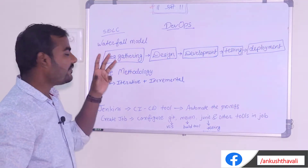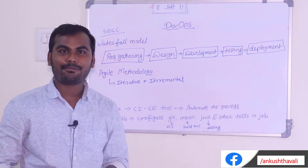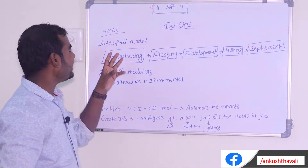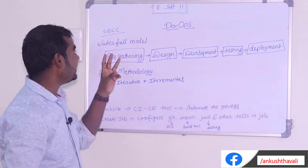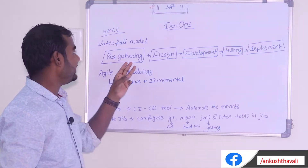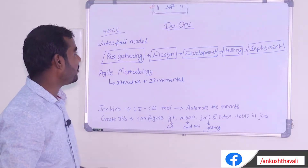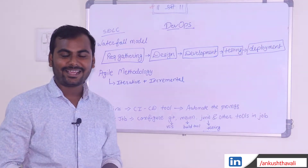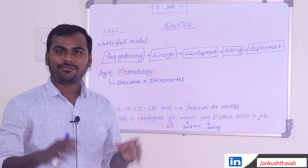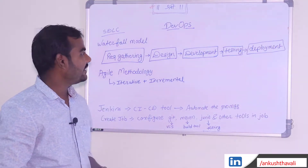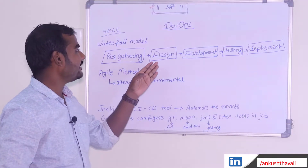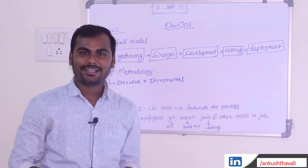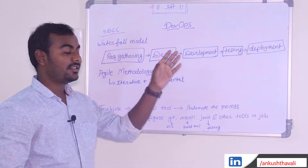Before starting with DevOps, let me give you some background on how we started working on the DevOps platform. In the initial days, when we were trying to create any project, we were using the Waterfall model. You can see the different phases of the Waterfall model: the first phase is requirement gathering, where we get the requirement from the client. Once the requirement is clear, we start designing the project, then move to development, testing, and finally deployment.